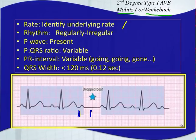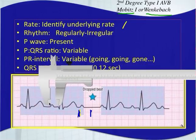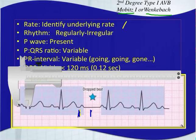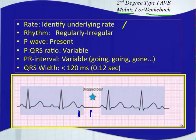The pattern that makes this a second degree type 1 is what we call 'going, going, gone.' The PR interval gets longer from one beat to the next — going, going, gone, then no QRS complex. It could be going, going, going, gone — over three or four beats before you have a dropped beat. That's typically the pattern to remember. The QRS width should be narrow, less than three small boxes wide.